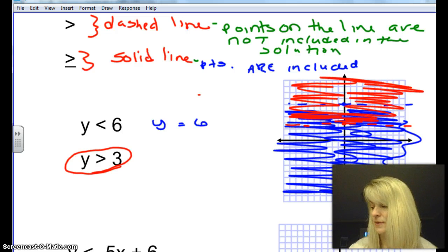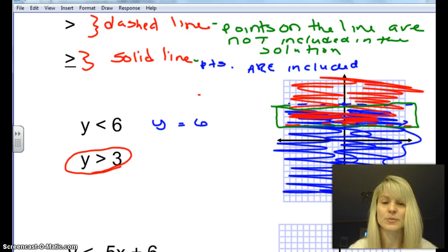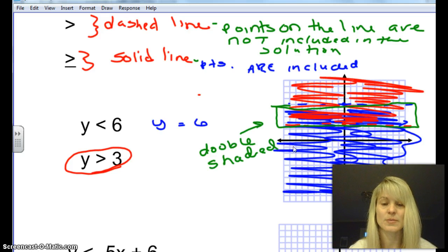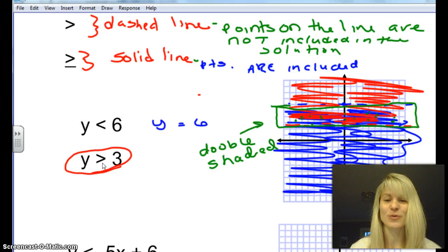So we should have a region here between the 3 and the 6 that has both colors. That's called double shaded. And that means for this system, all these points in the double shaded region are solutions. So this point, this point, this point, any points in here are solutions to this equation. Okay? So just to recap, we want to graph both these, shade them, and then we're double shading it as that's her solution.